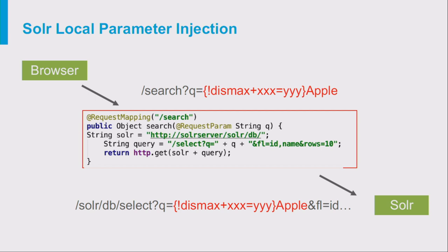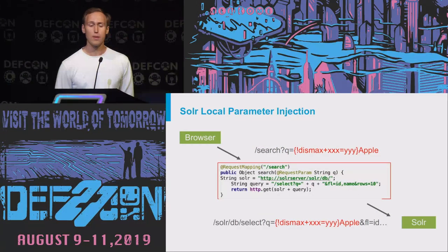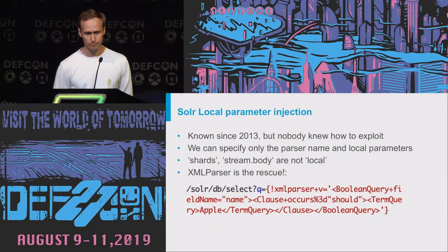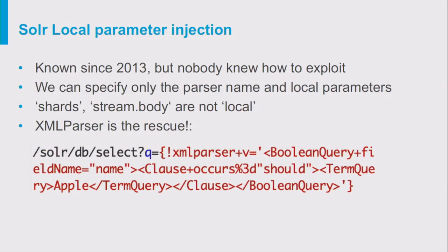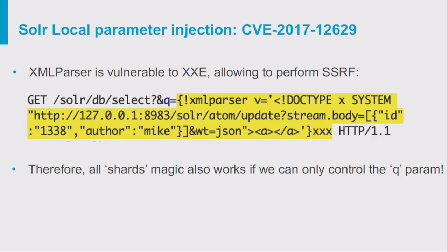Even if we cannot control additional parameters — even if we can control only one single query parameter — we can still use known local parameters in the braces and specify the parser type. This attack has been known since 2013, but nobody really knew how to exploit it. Until recently, we figured out that we can use an XML parser to supply the full search query in XML format. And of course, since it's Java, it was vulnerable to XXE — and that's how we leverage this to an SSRF attack by controlling just one single query parameter.